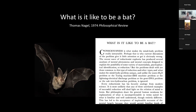Nagel used the example of a bat to talk about consciousness and the experience of what it is like to be a human being — how can you empathize with other animals? Can you truly understand what it is to be a bat, to echolocate, to fly in the dark? He argued that the answer is no — you can't truly know what it is like for another animal, or for another human for that matter. But that doesn't stop us from trying.